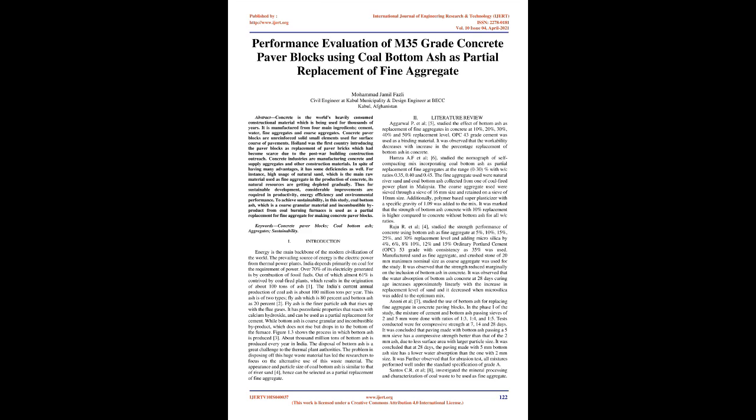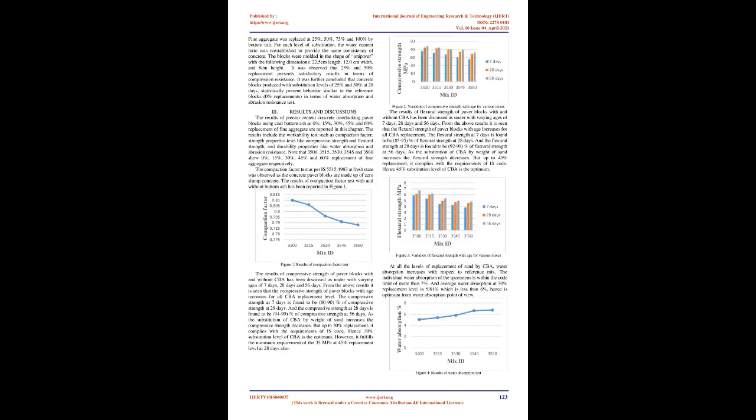Hamza et al. [6] studied the mix design of self-compacting concrete incorporating coal bottom ash as partial replacement of fine aggregates. The fine aggregate used was natural river sand and coal bottom ash collected from a coal-fired power plant in Malaysia. Coarse aggregate was sieved through a 16mm sieve and retained on a 10mm sieve. A polymer-based superplasticizer with specific gravity of 1.09 was added. It was found that the strength of bottom ash concrete with 10% replacement is higher compared to concrete without bottom ash for all W/C ratios.